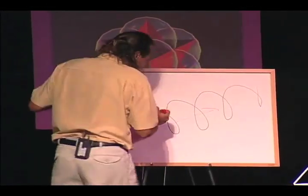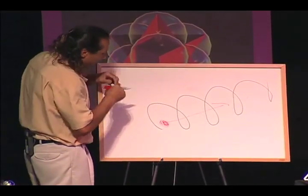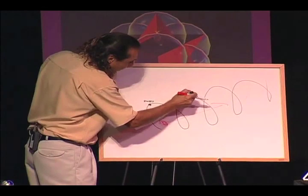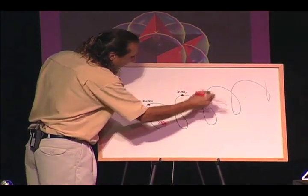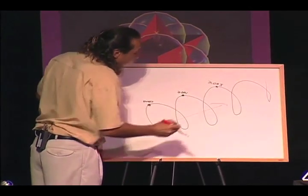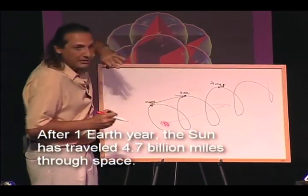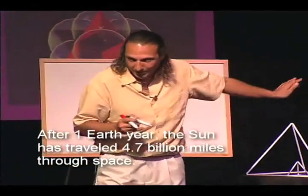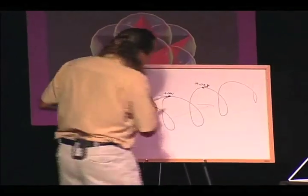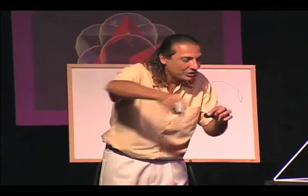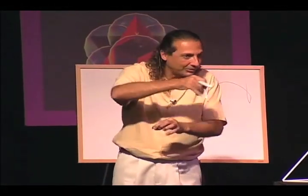If you look at the earth on this vortex, this position might be 2000, this one 2001, and then 2002 — and these are extremely long distances apart. Millions and millions of miles apart. There's nothing in between, and the planets do not come back onto their path. They don't. If they did, we would most likely get the same set of information over and over, like a broken record.